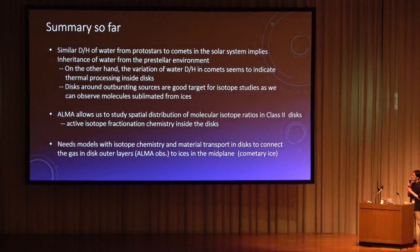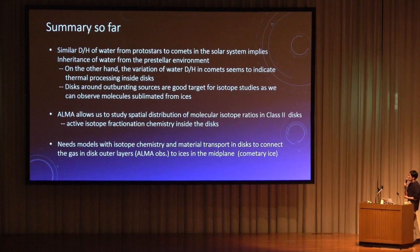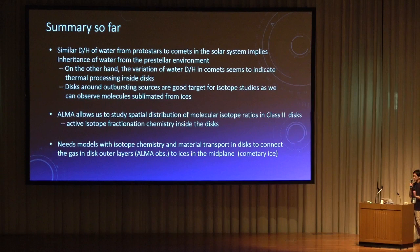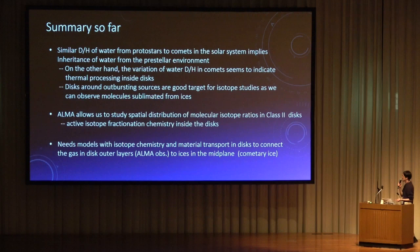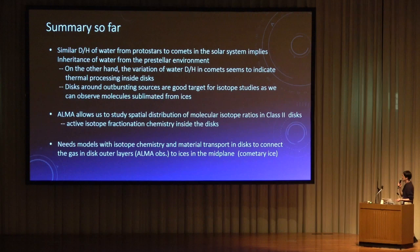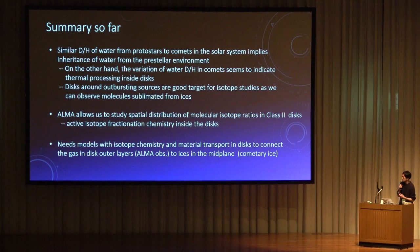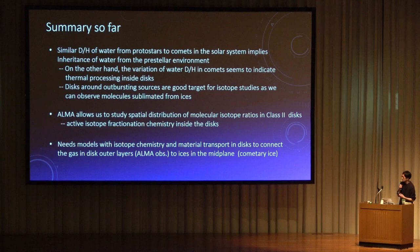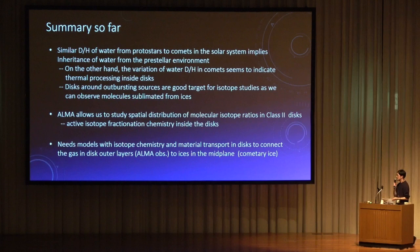In summary: water in disks and comets is likely inherited from pre-stellar stages. Observations of the disk around the outbursting source are very helpful for studying isotope ratios because we can observe the ice. ALMA observations allow us to study spatial distributions of molecular isotope ratios in class II disks, and these suggest active isotope fractionation chemistry inside class II disks. Spatial distribution is very helpful for understanding the origin of molecules. Finally, we need a model combining isotope chemistry and transport processes simultaneously to connect gas observations by ALMA with cometary observations.